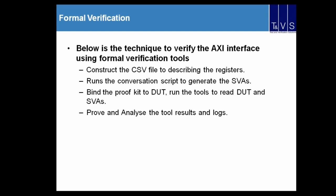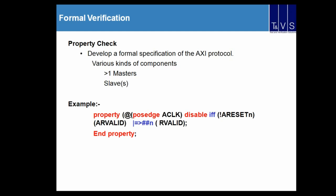The technique to verify an AXI protocol involves first constructing a CSV file describing all registers, then running a script to generate system reload assertions, then finding proof kits on both the master side and slave side. After running the tool, we prove and analyze the results. For property checking, we decide what kind of assertions to check — for example, a property where AW valid asserts and after a few cycles R valid should appear.